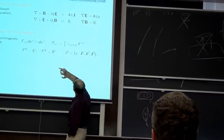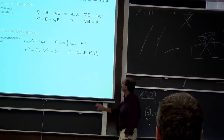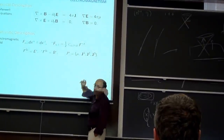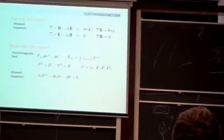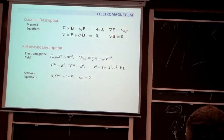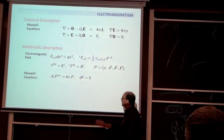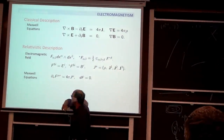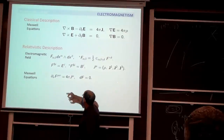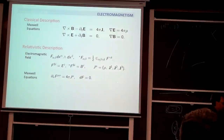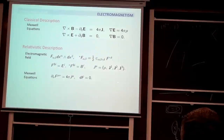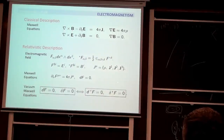I can introduce the spacetime current four-vector J, which consists of ρ and the spatial components j₁, j₂, j₃. With these definitions, the Maxwell equations take the very simple form: the spacetime divergence of F equals 4πJ^μ, and the exterior derivative of F equals zero. This incorporates both the equation for B, the equation for E, and the divergence equations.